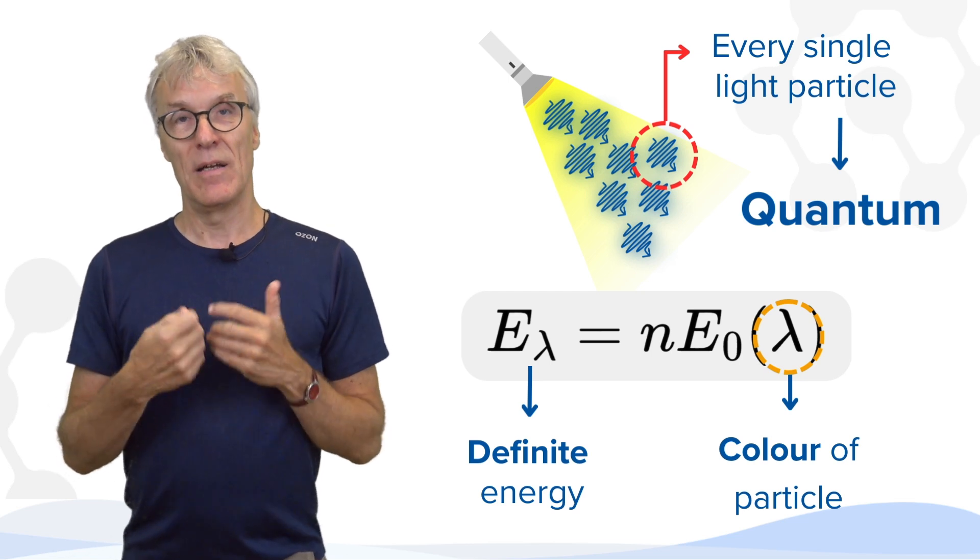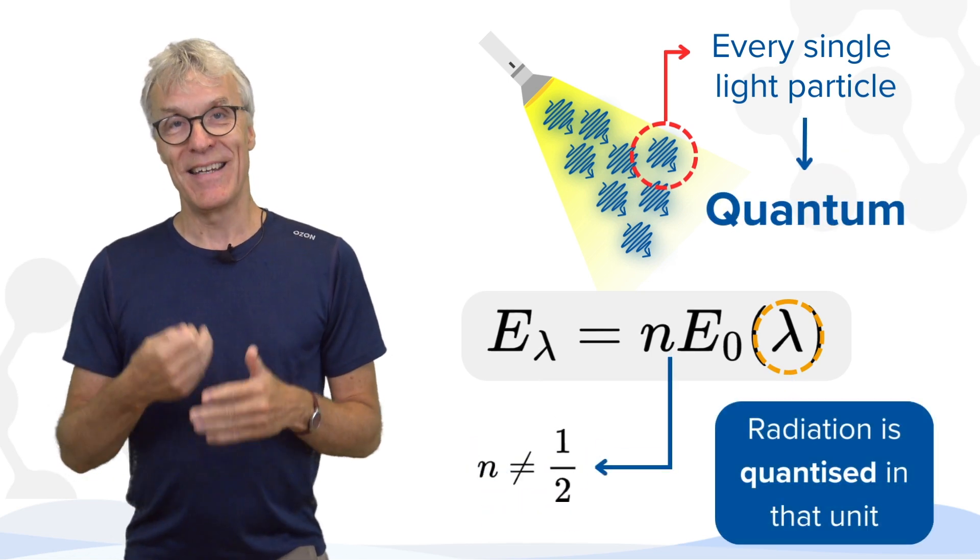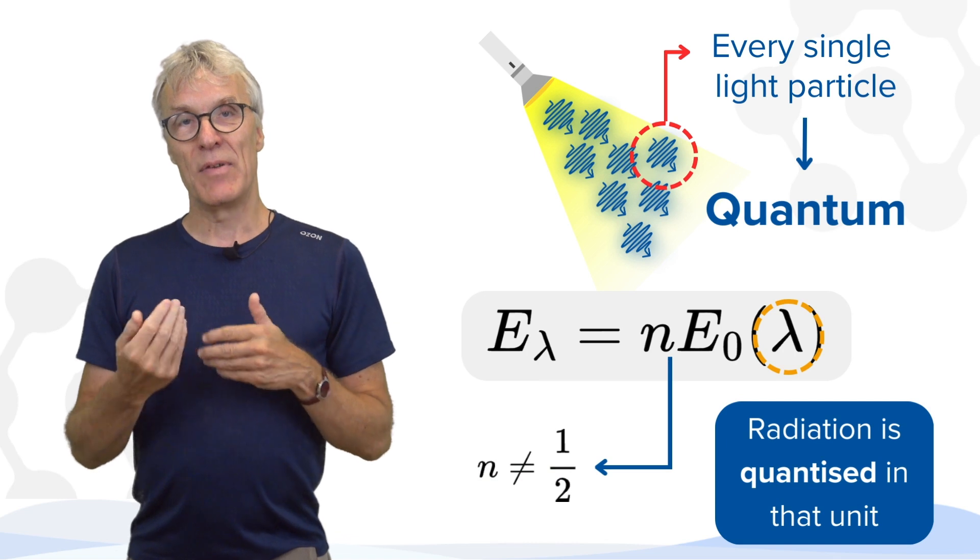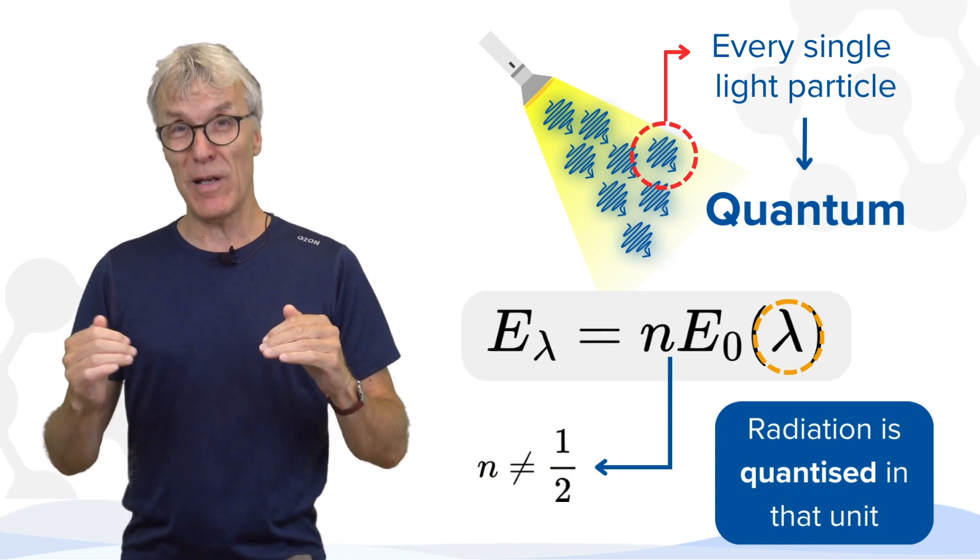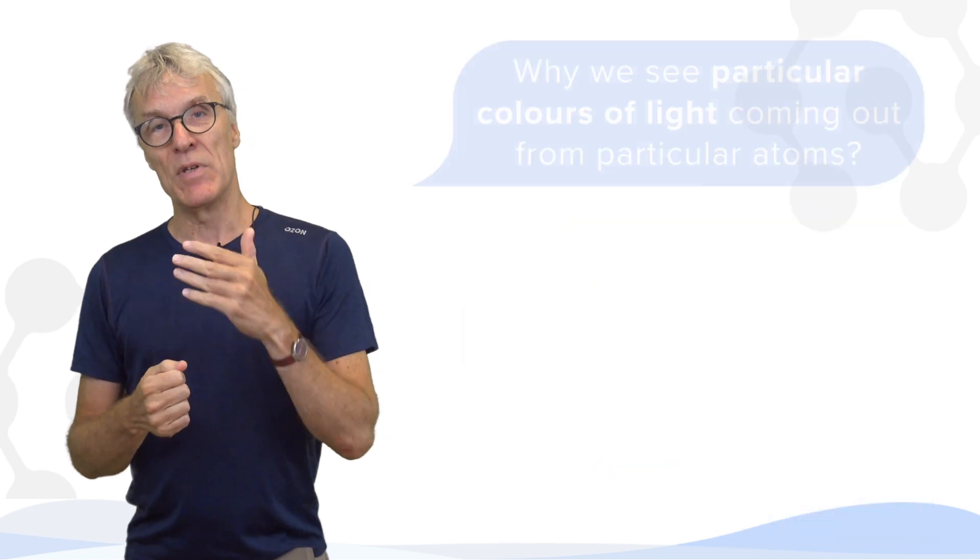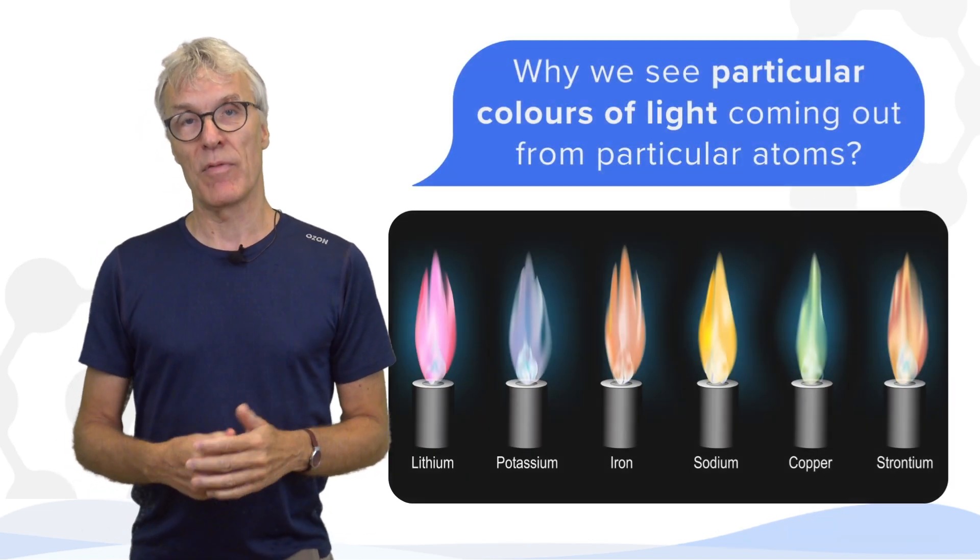You cannot have half that energy because radiation is quantized in that unit. And that was a very important element in the understanding, in the early quantum mechanics, of why we see particular colors of light coming out from particular atoms.